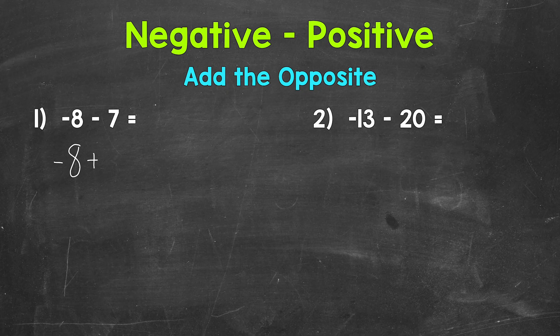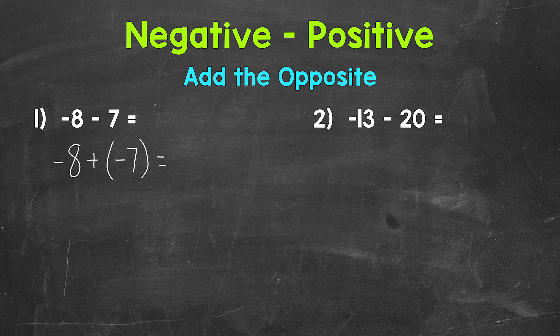Well, subtracting a positive 7, the opposite of that positive 7 is going to be negative 7. So let's add the opposite here. Negative 8 plus negative 7 gives us negative 15.